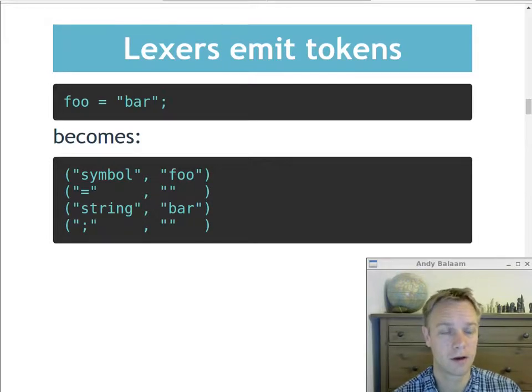So in Cell, Cell's written in Python, and the tokens that the Cell's lexer produces are these little tuples with the name of the type of token on the left, and then the contents of the token on the right.